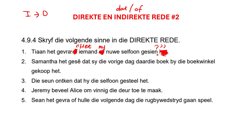Samantha het gesê dat zij die vorige dag daar die boek bij die boekwinkel gekoopt het. Okay, so let's do it again. Samantha het gesê — we put our colon. We erase 'dat'. Remember, 'dat' is from direct to indirect and we don't need it here because we're changing back to direct. Now we open our quotes. Samantha het gesê, and we now have to have our verb — it's either going to be the pronoun first or the verb first. When it's not a question, the verb won't be first.